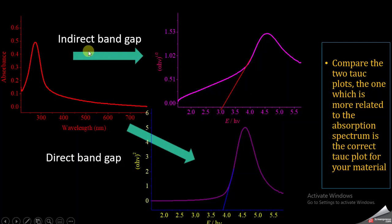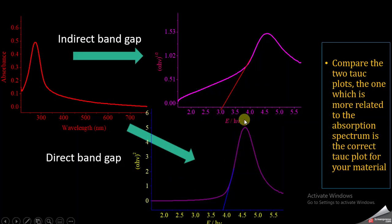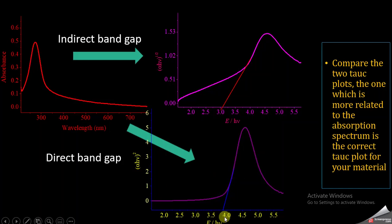Now you have drawn two kinds of band gap plots — indirect and direct — but you have to find out which kind of band gap your material actually has. It is very simple: you just need to see which of these two plots is more related to your actual absorption spectrum. Here we can see that the direct band gap plot is more similar to the absorption spectrum, so your material has a direct band gap and you use that plot to determine the band gap. This is how you find the band gap of your material using absorption spectroscopy data.